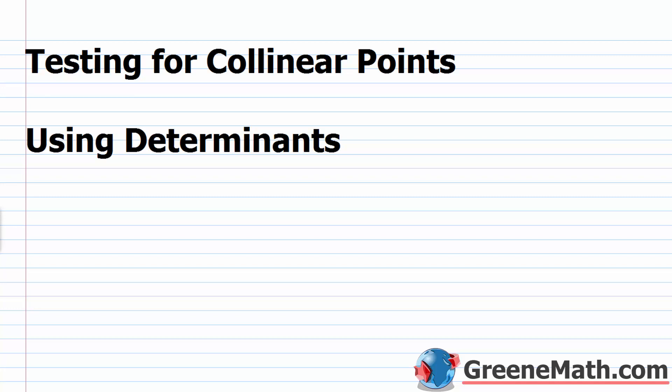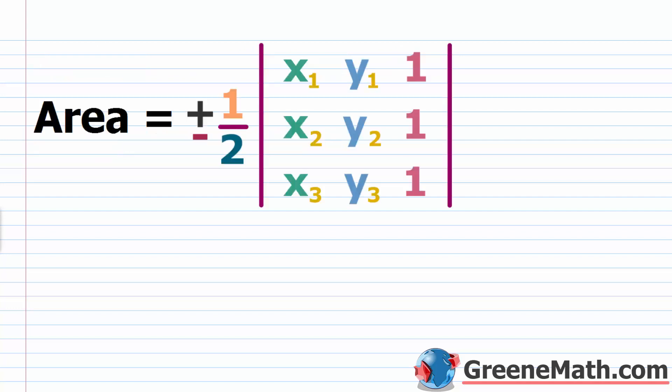In this lesson, we want to talk about testing for collinear points using determinants. In our last lesson, we talked about how we could use determinants to calculate the area of a triangle given three vertices of the triangle. I just want to review the formula because we're going to use it here today.